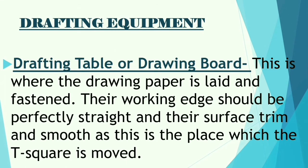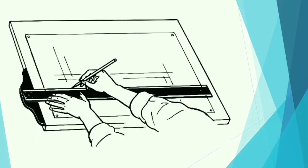Now let's move to drafting equipment. First is the drafting table or drawing board — this is where the drawing paper is laid and fastened. The working edge should be perfectly straight, and the surface trim and smooth, as this is where the T-square slides. The drawing board must be smooth because the T-square moves along it, especially along this edge, so it must be perfectly straight.